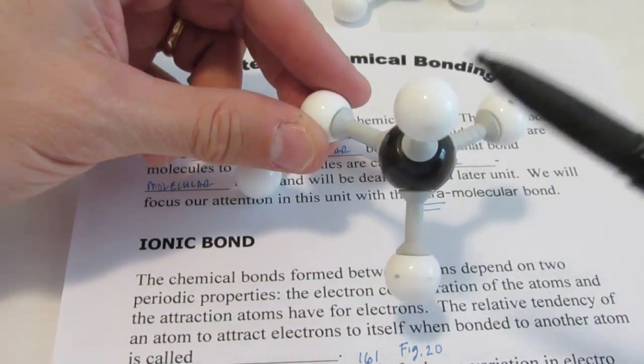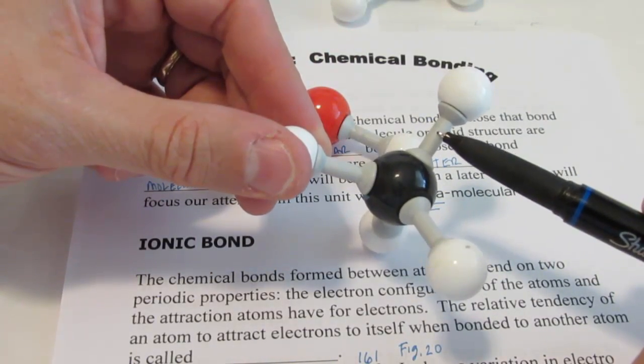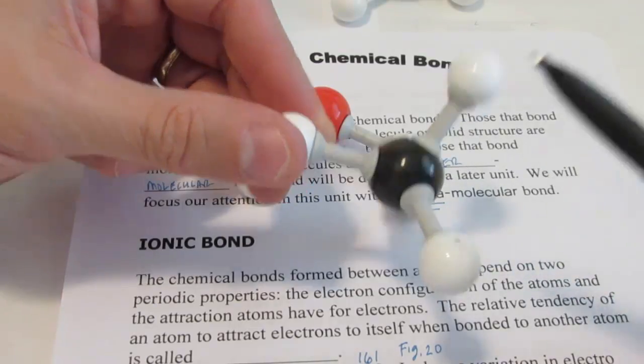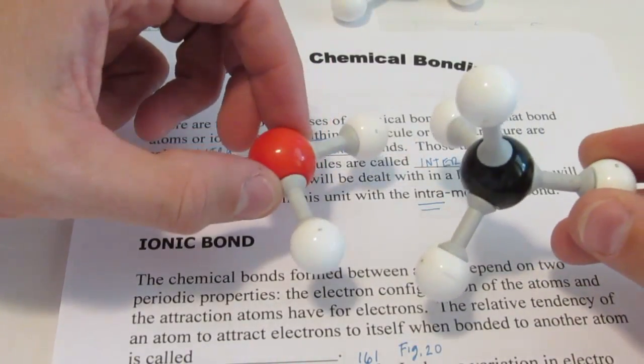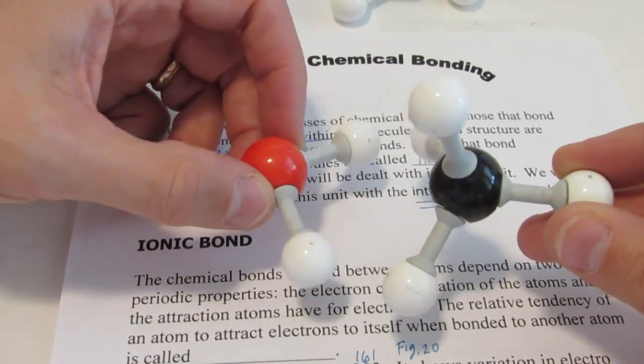If this model represented methane, a carbon bonded to four hydrogen atoms, this bond right here would represent an intramolecular bond. It's bonds that hold the atoms together within a molecule or ions together within an ionic lattice.